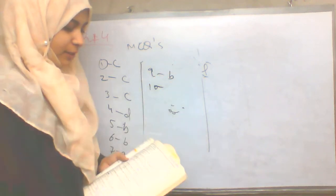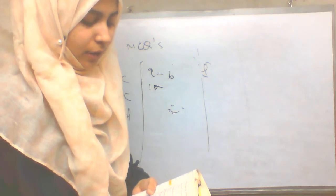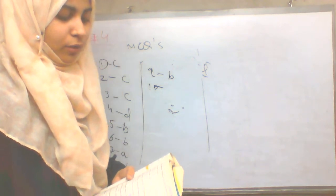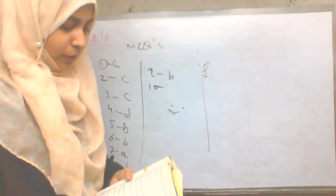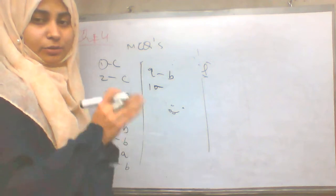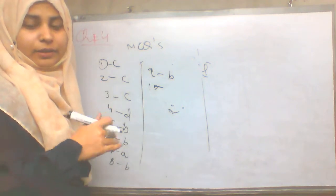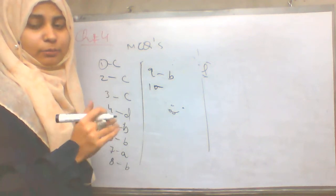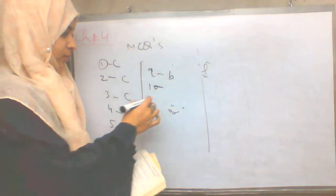Question 10: Ice floats on water because ice is less dense as compared to liquid water. So the answer to question 10 is C.